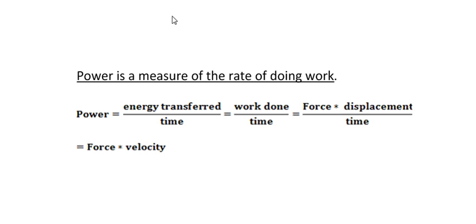So in summary, power is a measure of the rate of doing work or the rate of energy transfer. Power is therefore equal to the energy transferred per time or power is equal to the work done per unit time.